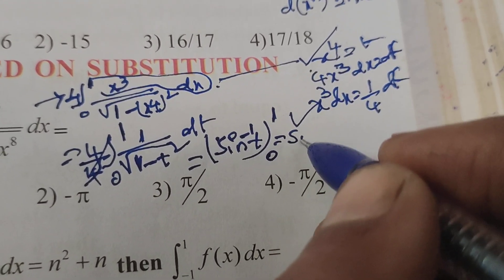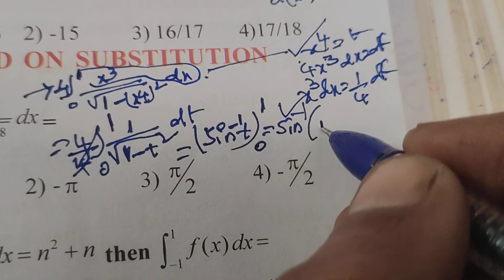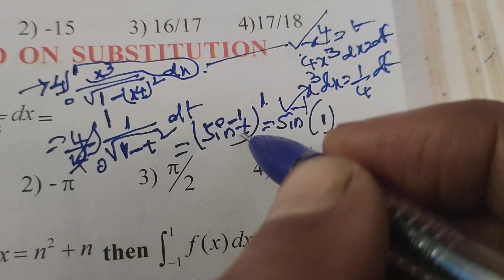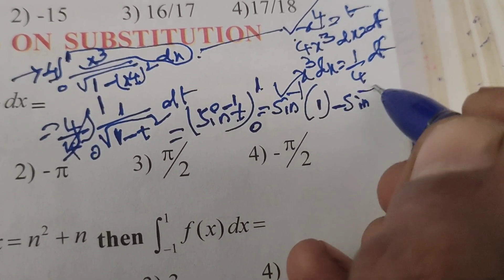Therefore sin⁻¹ of t means 1. First of all substitute limit in place of t, minus sin⁻¹ of 0.